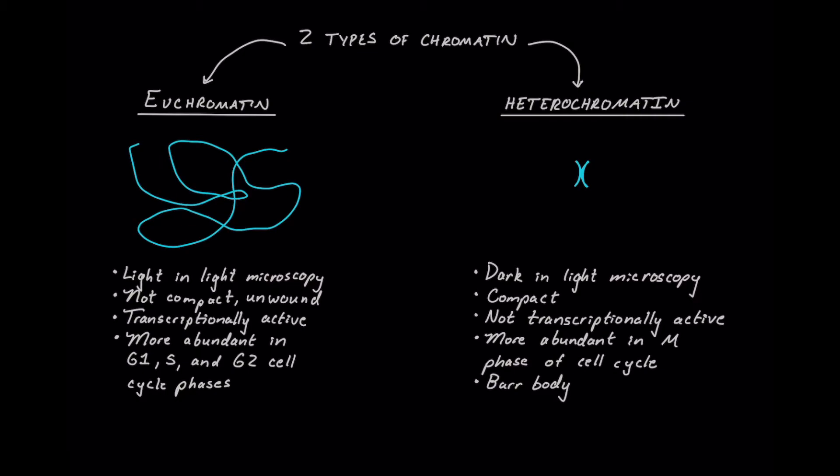Euchromatin is going to show up light in the light microscopy, and it's going to be very unwound, as I've shown, perhaps not so eloquently here. It's going to be not compact, very unwound. The advantages of being unwound is that transcription factors and things like RNA polymerase are going to be able to get in and access that DNA and transcribe things. Therefore, it's going to be transcriptionally active.